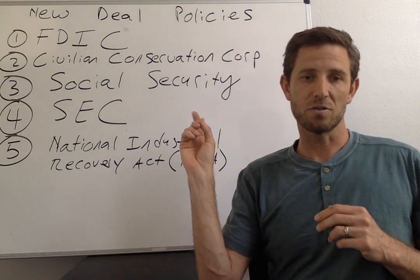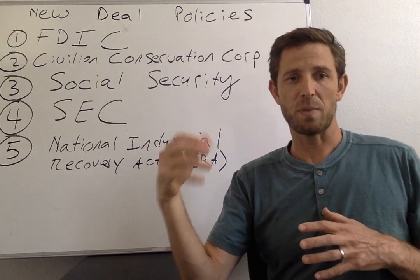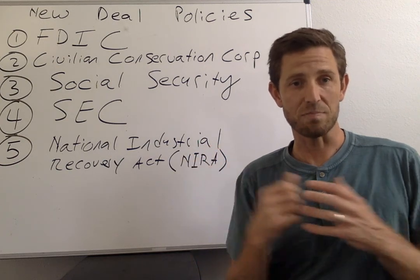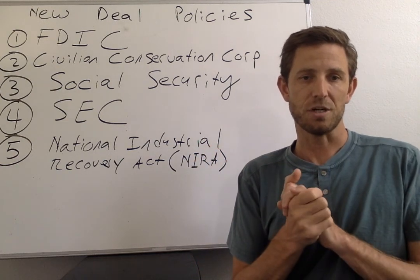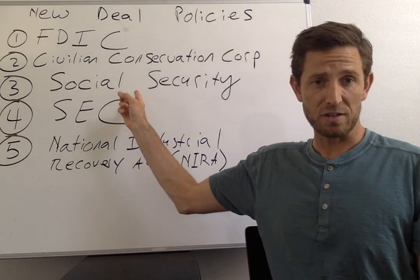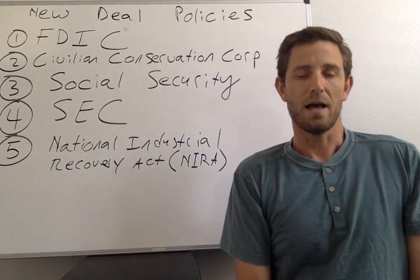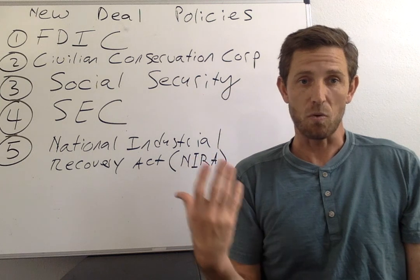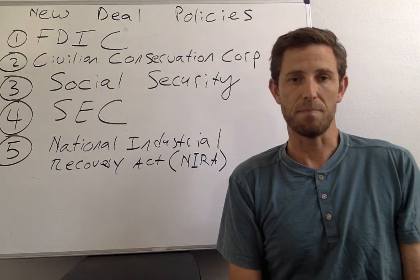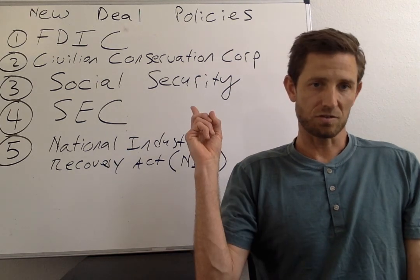Primarily the benefits from Social Security go toward elderly folks, but there's also spending directed toward people who can't work because of some disability or similar circumstance. The problem Social Security tries to address is that in the absence of the program, lots of older folks had not saved enough for retirement — and the idea is that this is bad for the economy and for the country, which Social Security can address.